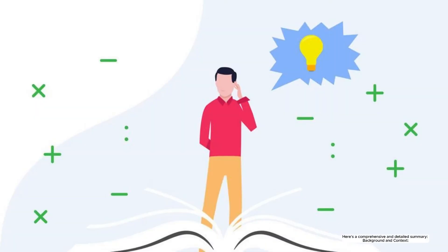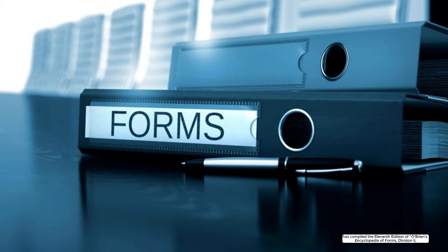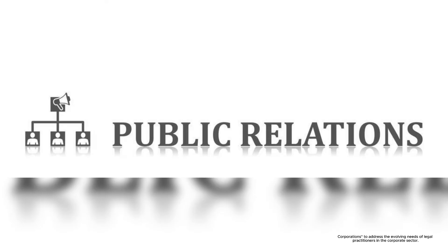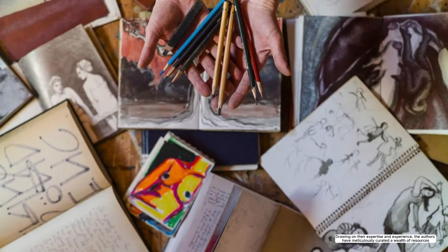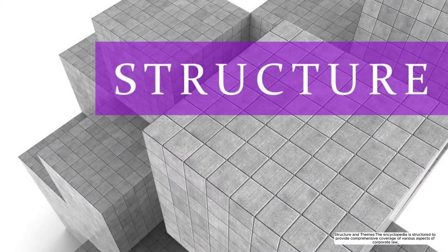Here is a comprehensive and detailed summary, background, and context. Aird and Burley's LLP, a prominent law firm specializing in corporate law, has compiled the 11th edition of A Bryan S. Encyclopedia of Forms, Division II: Corporations to address the evolving needs of legal practitioners in the corporate sector. Drawing on their expertise and experience, the authors have meticulously curated a wealth of resources to assist professionals in efficiently managing corporate matters.